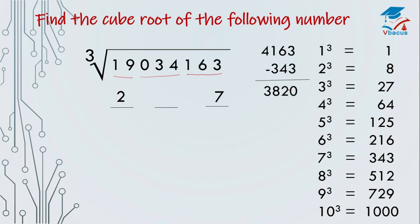We have to consider only the 10th digit — forget remaining digits. There is a formula to find the middle digit: 3 × L² × M = 2. L is the last digit and M is the middle digit. So L is here 7. So 3 times 49 — because square of 7 is 49 — M is the middle digit which we have to find out, and it equals 2. This 2 is that number.